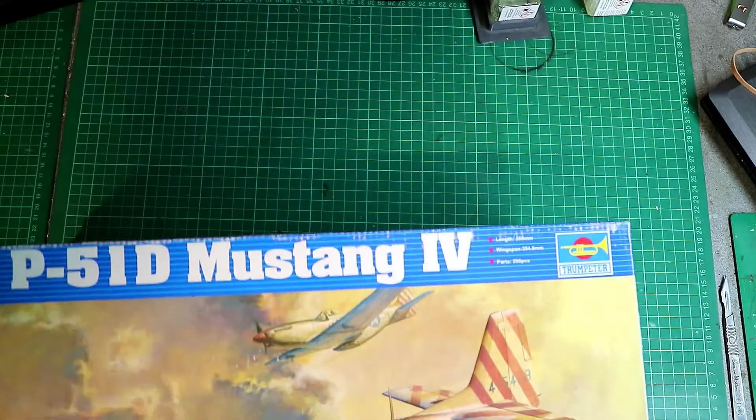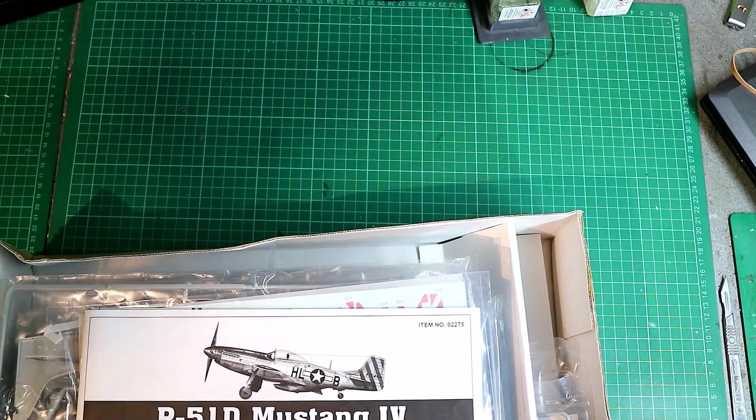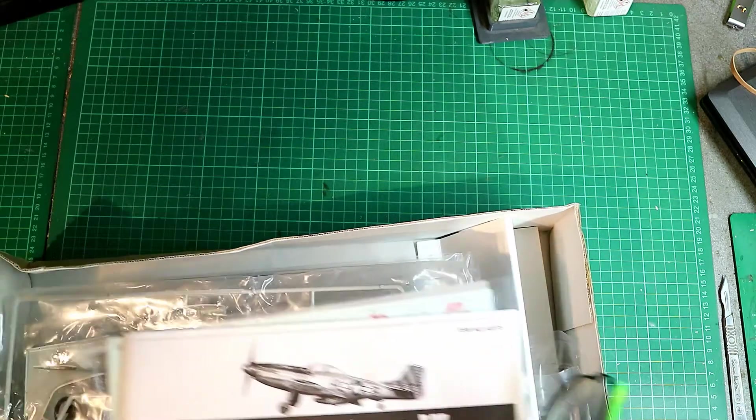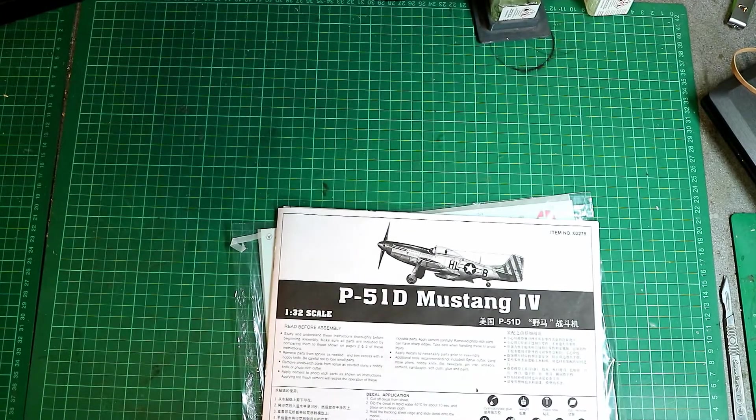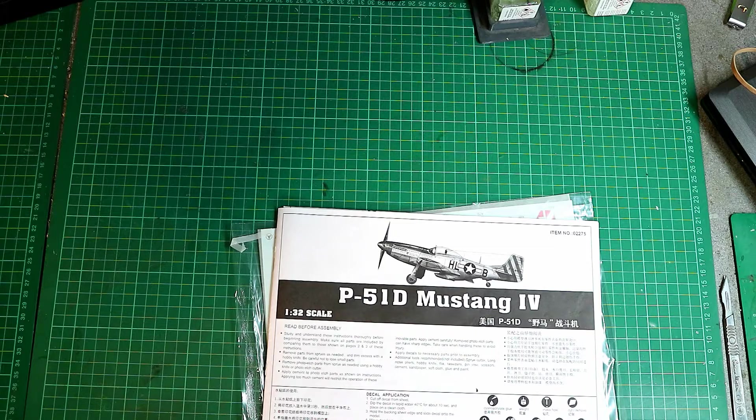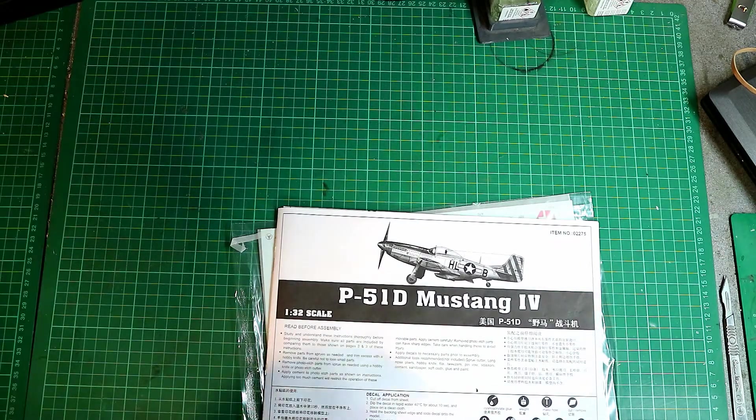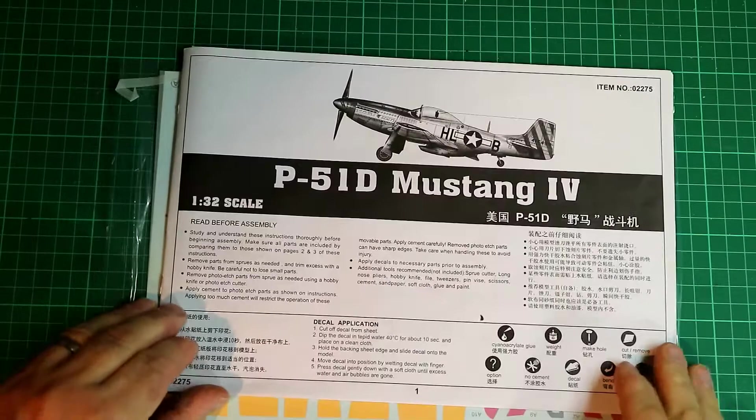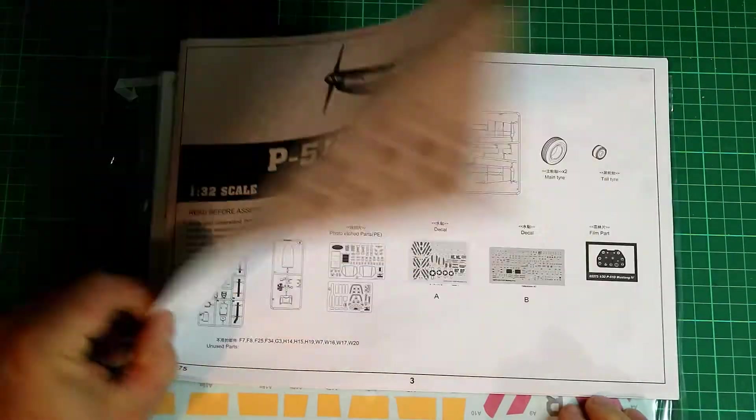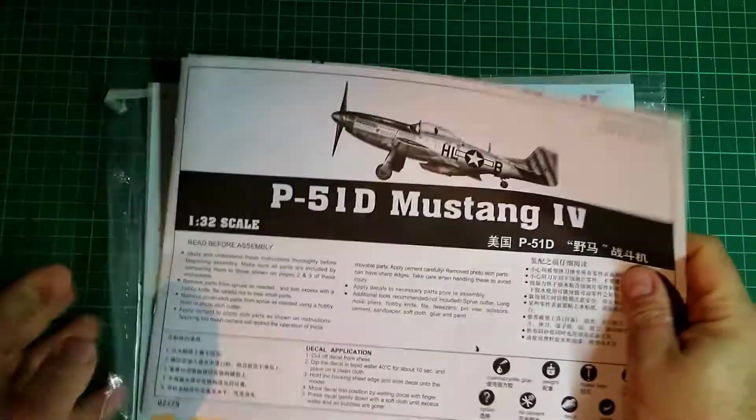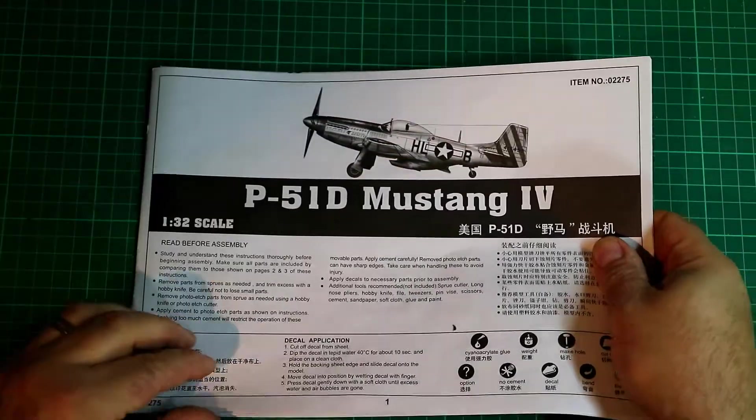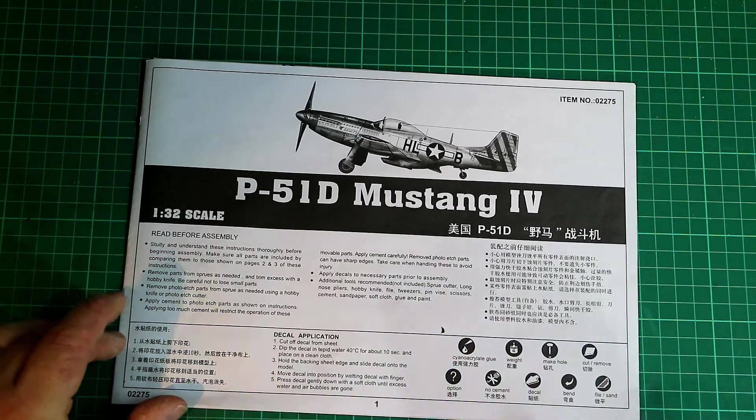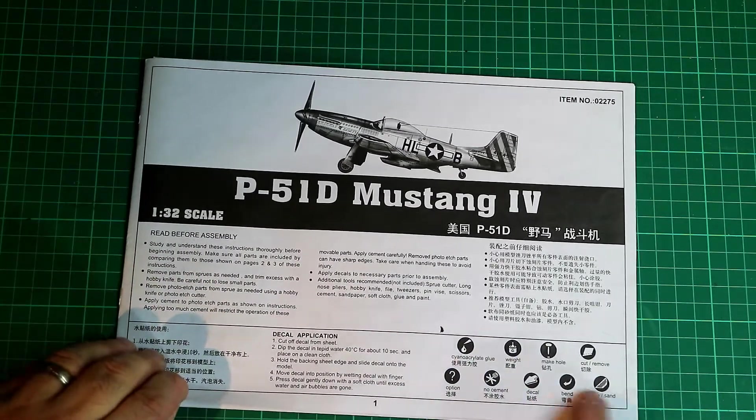Right, let's just crack straight in here. We'll start with the instructions and decals and then we'll come onto the kit parts in a moment. Let's zoom in a little bit here for you. Fairly standard type of Trumpeter to Hobby Boss type instruction sheet. It's in just straight black and white. You do get a bit of information, read before assembly stuff, decal application, and some indication of the symbols what they mean.